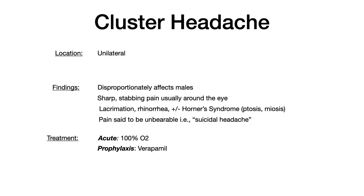Cluster headaches have earned the nickname 'the suicide headache' because the pain is so unbearable that patients can develop suicidal ideation. So cluster headaches are very serious and need to be treated. Acutely, you use 100% oxygen — that catches some students off guard since they expect NSAIDs or triptans, but oxygen is the answer. For prophylaxis, you give verapamil. So: verapamil prophylaxis for clusters, beta blocker prophylaxis for migraines — be able to differentiate those two.